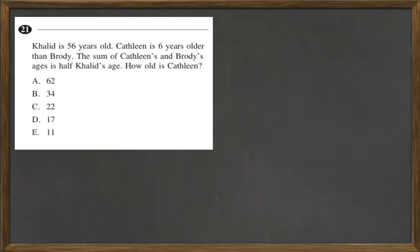Well, we know that Kathleen is 6 years older than Brody. So we have C equals B plus 6. We also know that the sum of Kathleen and Brody's ages